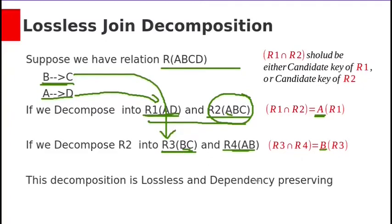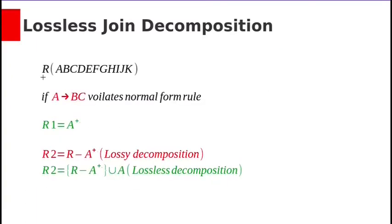So this decomposition is dependency preserving and lossless join decomposition. Suppose we have relation R with A, B, C, D, E, F, G, H, I, J, K attributes.